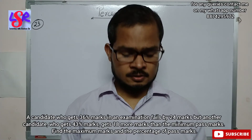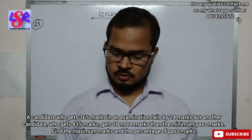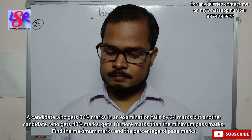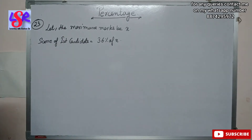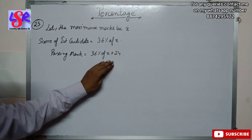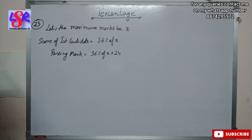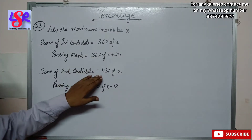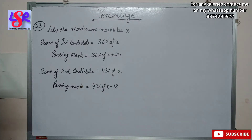Now let's see question number 23. A candidate who gets 36 percent marks in an examination fails by 24 marks, but another candidate who gets 43 percent marks gets 18 marks more than the minimum pass marks. Find the maximum marks and the percentage of pass marks. Let the maximum marks be x. The score of the first candidate is 36 percent of x. Since this candidate failed by 24 marks, the passing marks will be 36 percent of x plus 24. For the second candidate, the passing marks will be 43 percent of x minus 18.